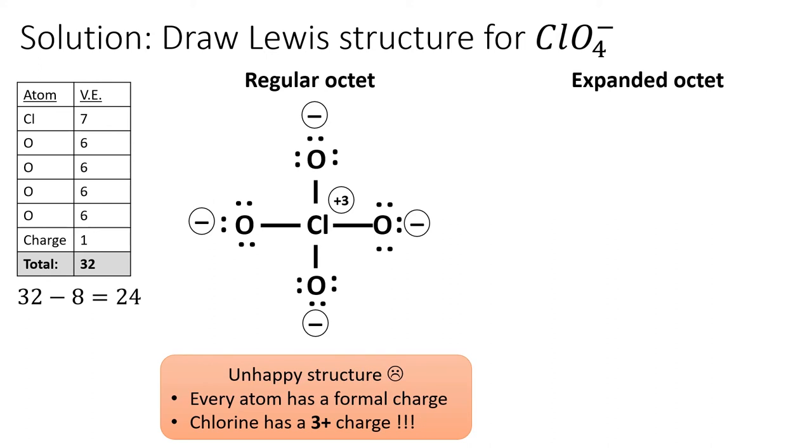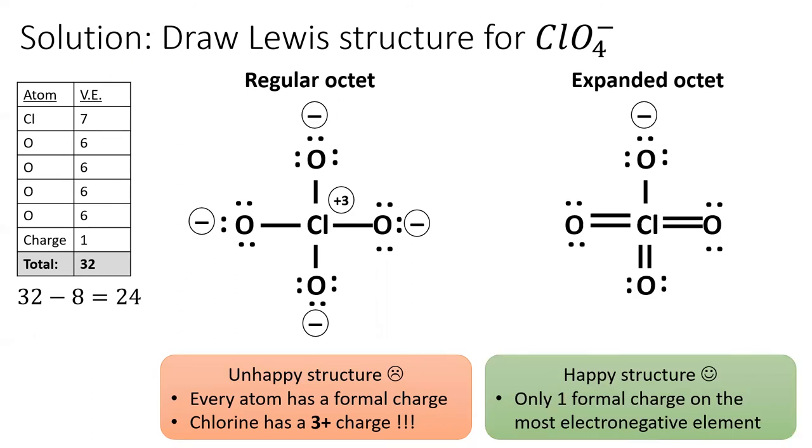At this point, I remember that chlorine is in the third row of the table and can use some d orbitals to form additional bonds. I'll move the lone pairs from oxygens down to form double bonds to the central chlorine atom. Excellent. In this structure, I have a single formal charge left over and it's on the most electronegative element, oxygen. This is a happy perchlorate.